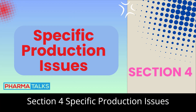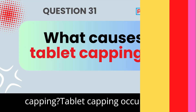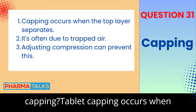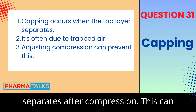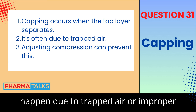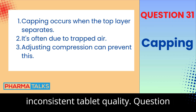Section 4: Specific Production Issues. Question 31: What causes tablet capping? Tablet capping occurs when the top or bottom layer of a tablet separates after compression. This can happen due to trapped air or improper compression techniques, and can lead to inconsistent tablet quality.